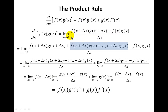The key to this proof is to add and subtract the term f(x + Δx)g(x). Here I subtracted it off — I added it and subtracted off the same thing, so I've really done nothing. This is still the difference quotient; I've just inserted these terms.